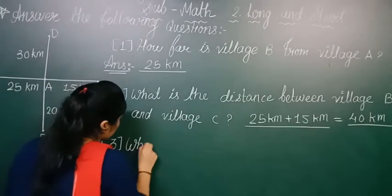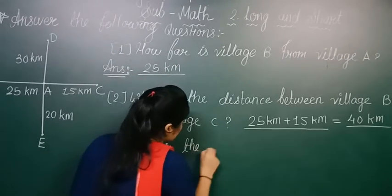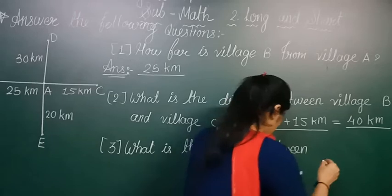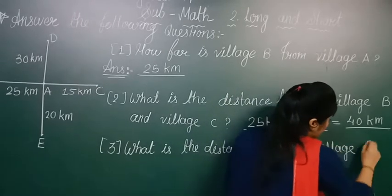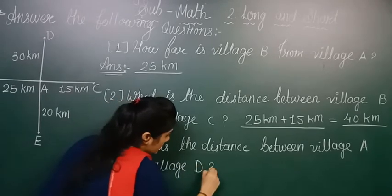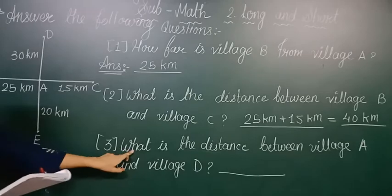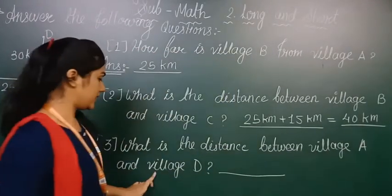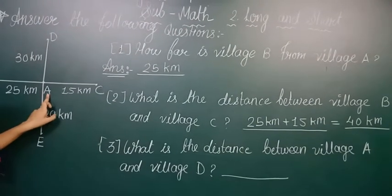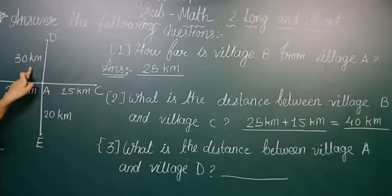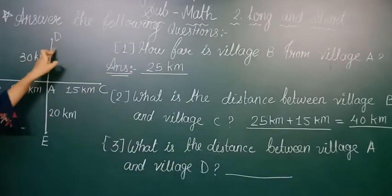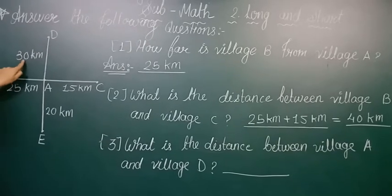Number three question: what is the distance between village A and village D? This question is similar to number two, but here we check points A and D directly. We already have the direct length of 30 km, so the distance between village A and village D is 30 km.